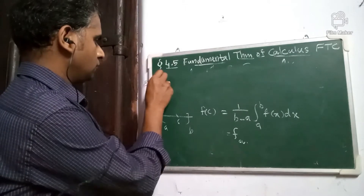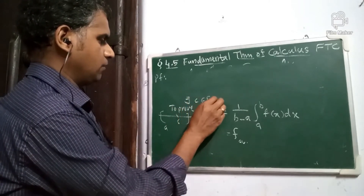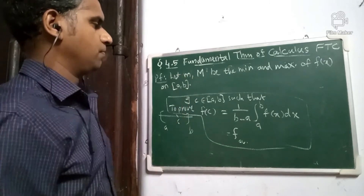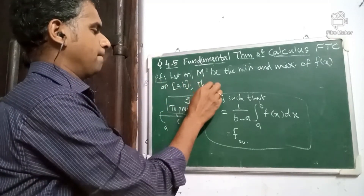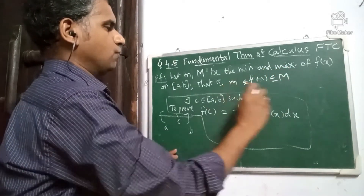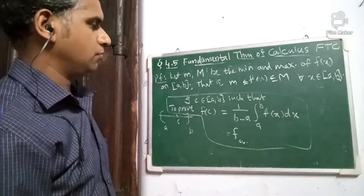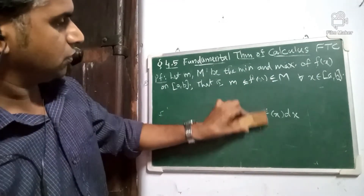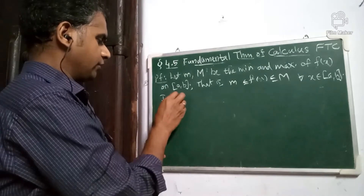Proof. Since f is continuous on [a, b], it has a minimum value m and a maximum value M. So m is less than or equal to f(x) which is less than or equal to M, for all x in [a, b]. Now let us integrate over [a, b].